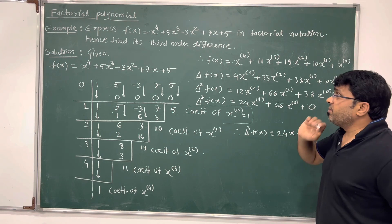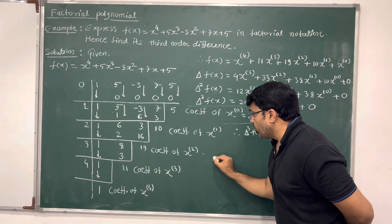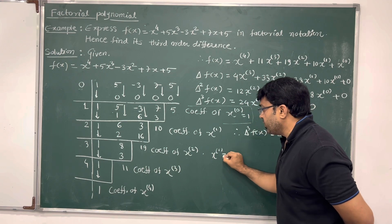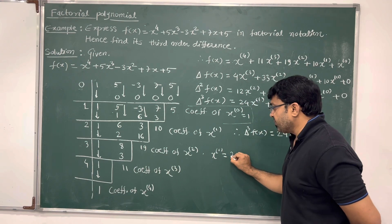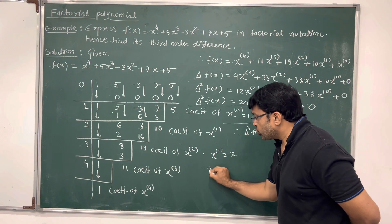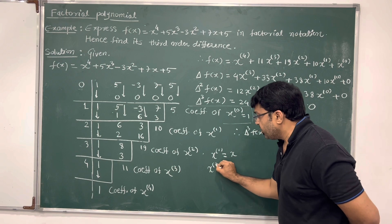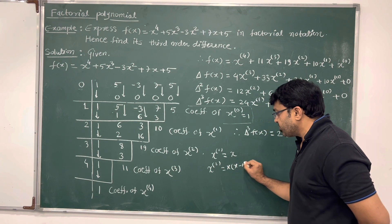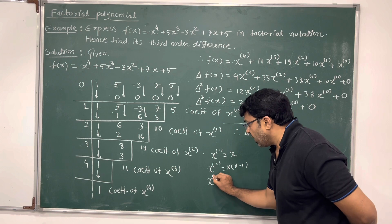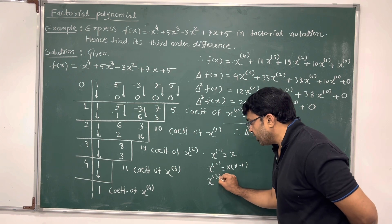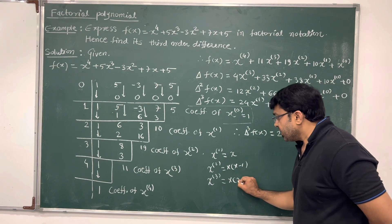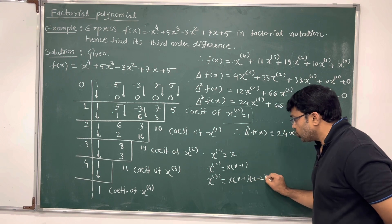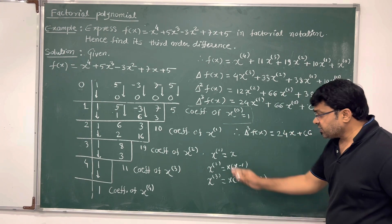So we write down the factorial polynomial: f(x) equals 1 times x to the power 4 factorial, plus 11 times x to the power 3 factorial, plus 19 times x to the power 2 factorial, plus 10 times x to the power 1 factorial, plus 5 times x to the power 0 factorial. Recall that x to the power 0 factorial is 1, x to the power 1 factorial is x, x to the power 2 factorial is x(x minus 1), and x to the power 3 factorial is x(x minus 1)(x minus 2).